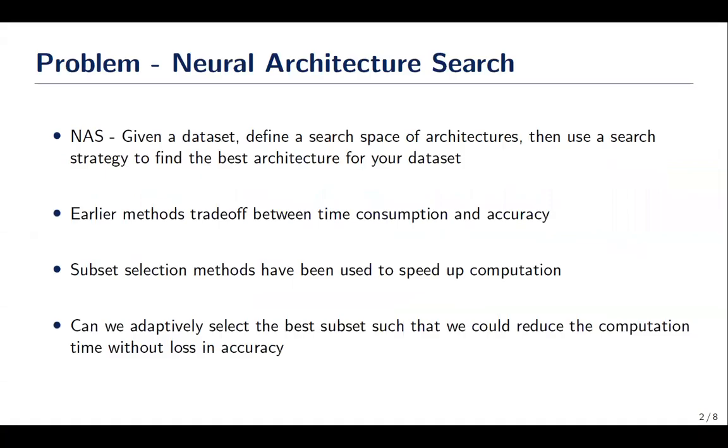The problem of neural architecture search is to find the best architecture given a search space and a dataset. Earlier methods include evolutionary methods, reinforcement learning, and Bayesian optimization, which took a lot of time for finding the best architecture.